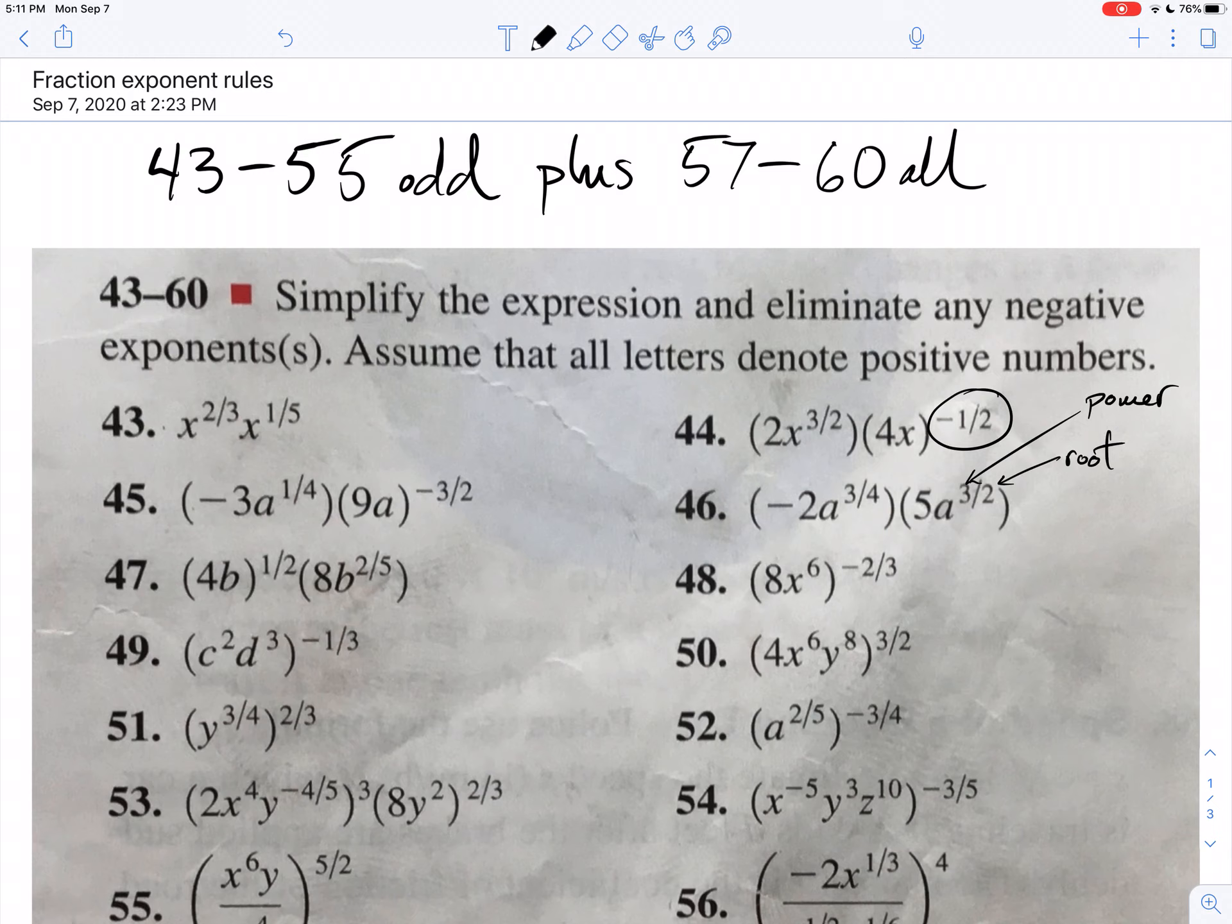Look at number 43. x to the two-thirds times x to the one-fifth. Well, what if this said x to the second times x to the first? You would just say it's x to the third. Well, it's the same rule. You're going to take these two numbers and add them. Now, you can get common denominators the old-fashioned way, and then add them together and say two-thirds plus one-fifth is, you know, what, 13-fifteenths? I don't know. I'm doing that in my head, so I hope I got that right.